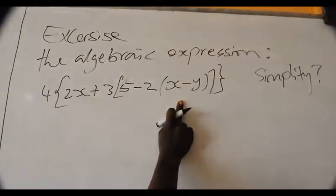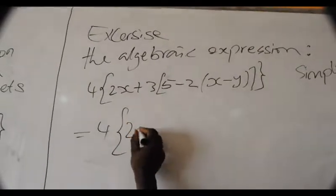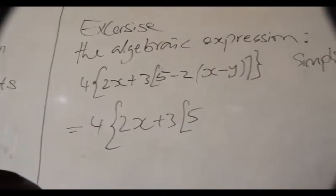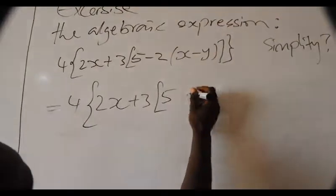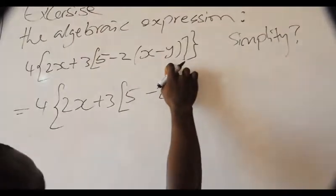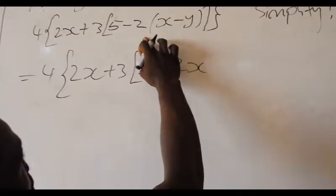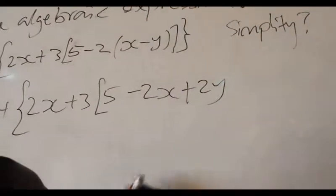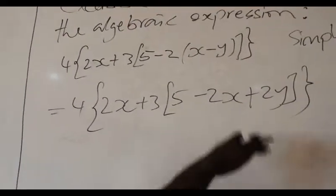What we do is multiply minus 2 times X. First, let's note 4 into 2X plus 3, then 5. Then minus 2 times X is minus 2X. And minus 2 times minus Y — minus times minus is plus — so minus 2 times minus Y gives us plus 2Y. Now the innermost bracket is gone.